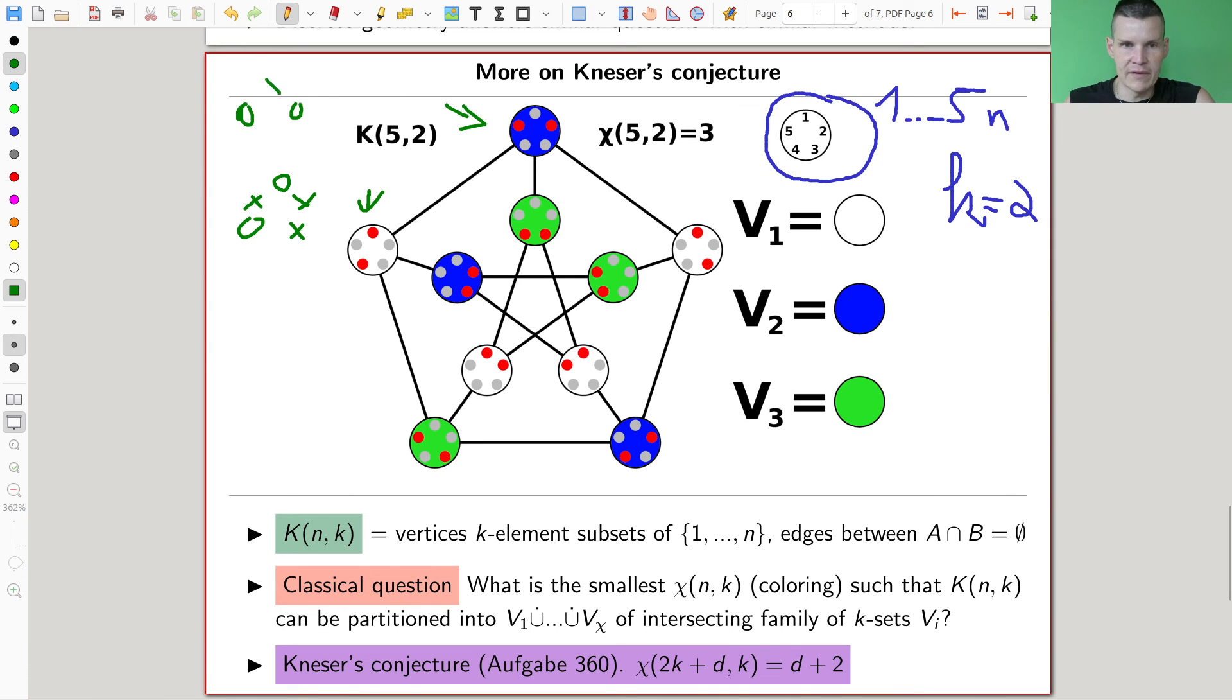And as you can see, the intersection is trivial. So that's why I put an edge and similarly for all the others. So this defines those Kneser graphs and Kneser conjectured, actually not really a conjecture, it was actually an exercise of Kneser. So Aufgabe 360, in case you care, so was an exercise. So whenever you have a conjecture that is difficult, just phrase it as an exercise. That makes people very happy usually.